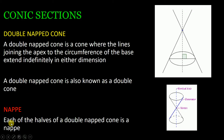What is the meaning of nappe? Nappe means each of the halves of a double nappe cone. You know a cone — think of your conical ice cream. A double nappe cone is a cone where the lines joining the apex to the circumference of the base extend indefinitely in either direction. As you can see, this is your base circle, and from the circumference this line extends in either direction, meeting at the apex. This line or surface is called the generator or generatrix.